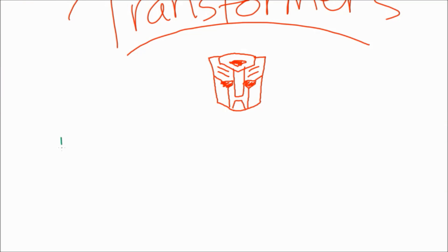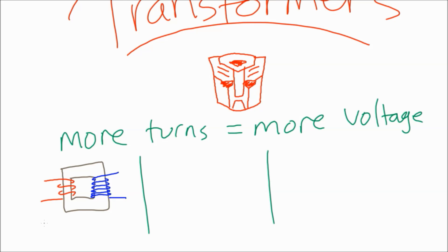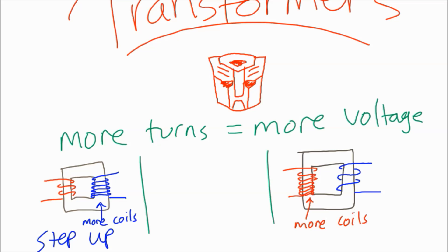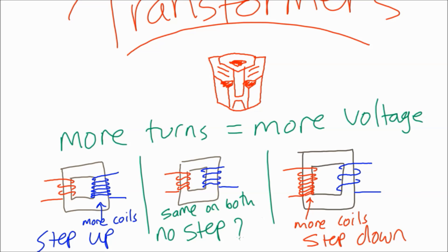One thing to remember is that the more turns there are on a particular side, the more voltage there is. So if there's more turns on the secondary, we say the voltage gets stepped up. If there are more turns on the primary coil instead, we say the voltage is going to be stepped down. And if we have the same number of coils on both, that would be... no step. Who knows. Step up, step down, or no step. Same step.